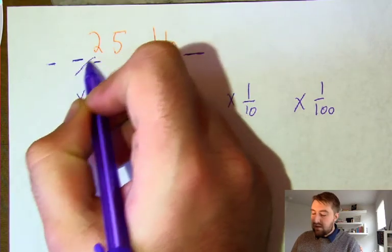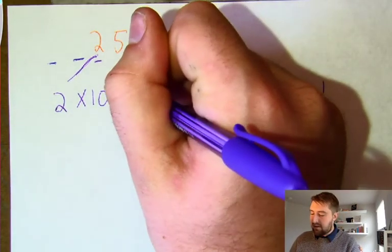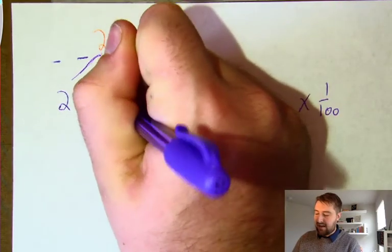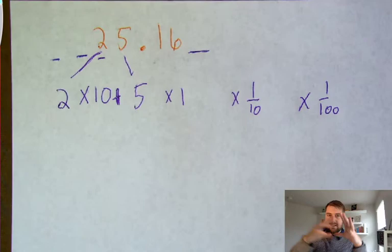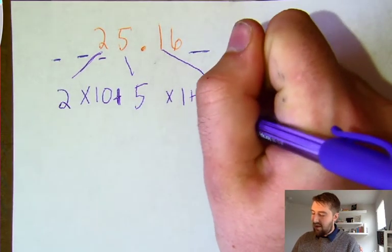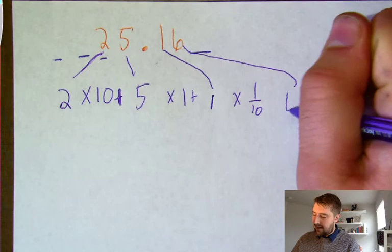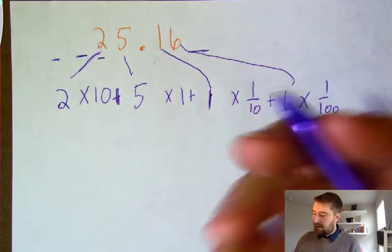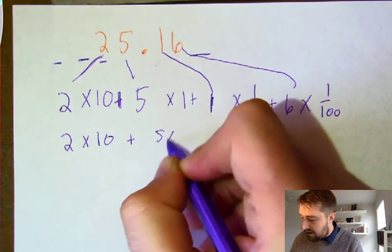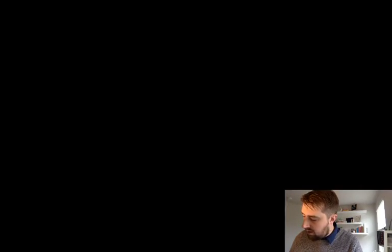Just like with the whole number and decimal examples, we drop our digit in the tens place next to our ten. The digit in the ones place—five—goes next to the one. We add plus signs in the middle because we're grouping them back together to return to our original number. One goes next to one-tenth, and six goes next to one one-hundredth. So we have: two times ten, plus five times one, plus one times one-tenth, plus six times one one-hundredth.